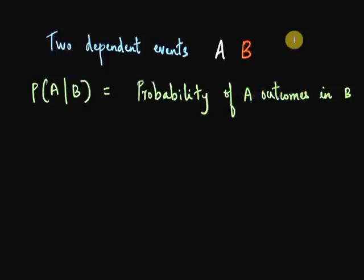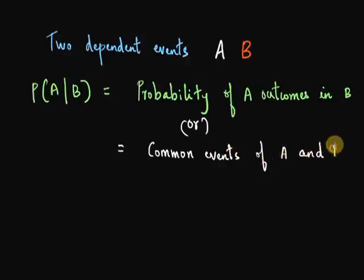In other words, if I have a set that contains all possible events that satisfy condition B, how many of those outcomes would also satisfy condition A? So if you think of this, it will be nothing but the number of events common to both A and B divided by the total number of B events.